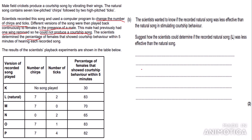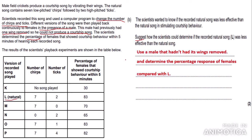The table shows the version of the recorded song played, the number of chirps and ticks in each version, and the percentage of females that showed courtship behavior within five minutes. The question asks: 'Suggest how the scientists could determine if the recorded natural song (indicated by L) was less effective than the natural song in stimulating courtship behavior.' My answer: they could use a male that hadn't had its wings removed, so it could produce the natural courtship song, and then determine the percentage response of females compared with L.